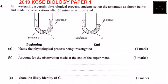This is the first setup. We have solution A, solution F, and we have G. That is at the beginning. After 30 minutes, we have solution A, solution F reduced to a mean volume, and we have G.